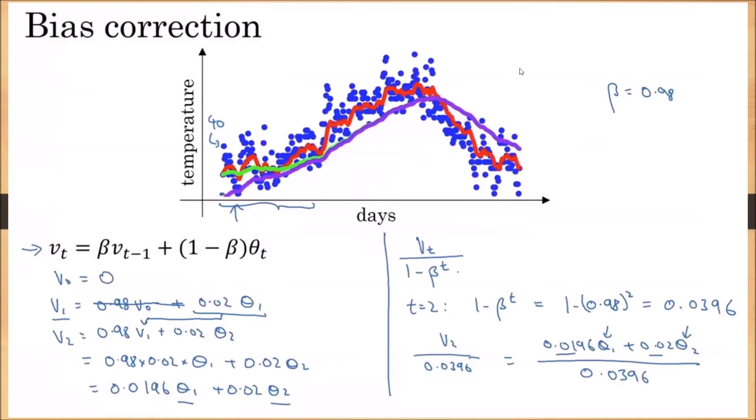If t is equal to 2, then we will write 1 minus β whole square. If t equal to 3, 1 minus β whole cube.